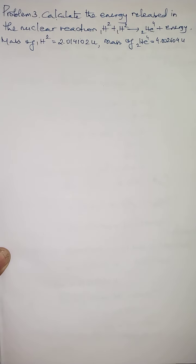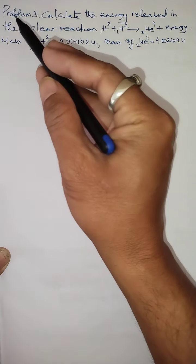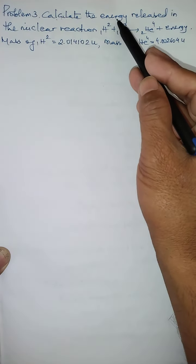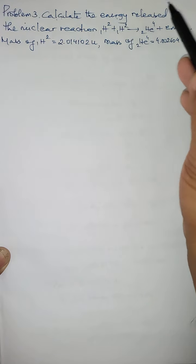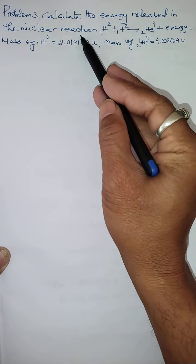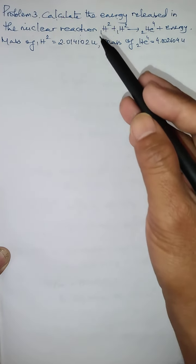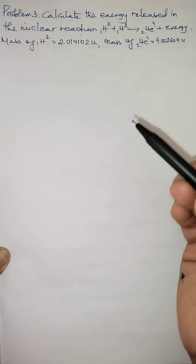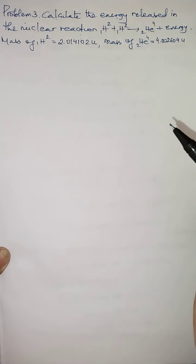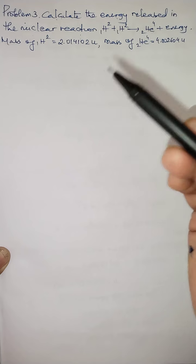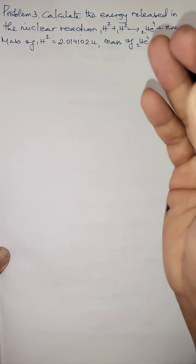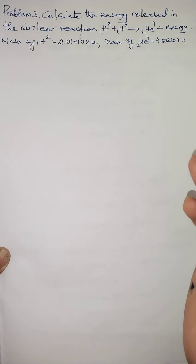Problem number three says: calculate the energy released in a nuclear reaction. Nuclear reaction means a nuclear fusion reaction or nuclear fission reaction. These are reactions that you are going to learn in detail in the next chapter, but let me just introduce them here.